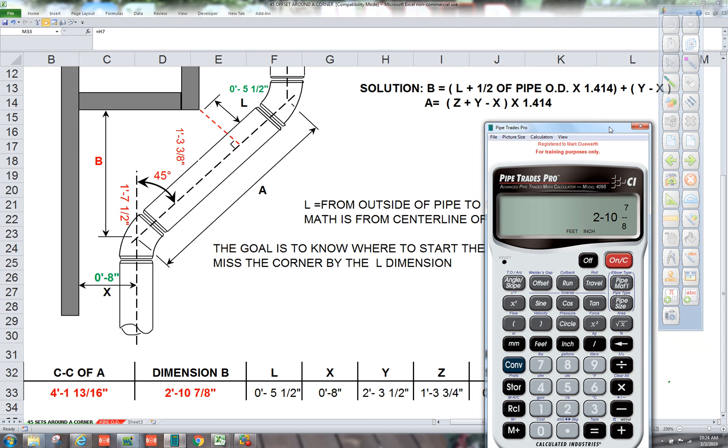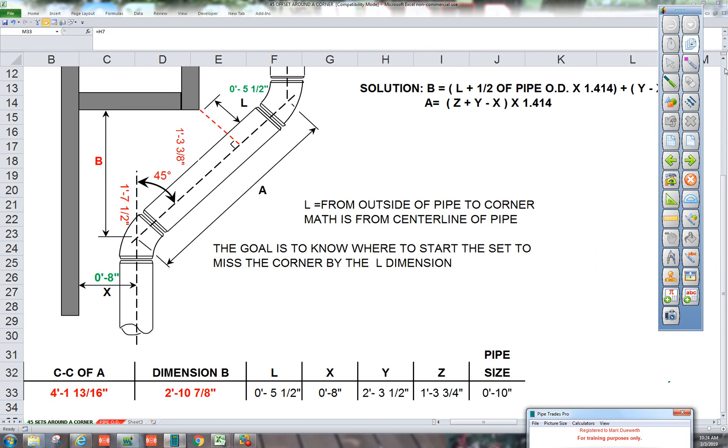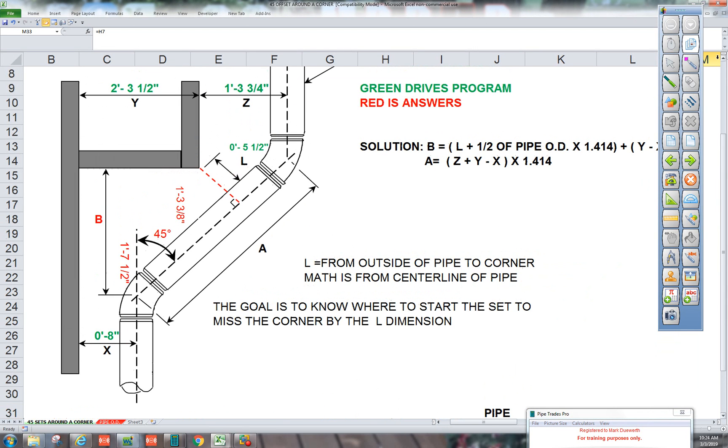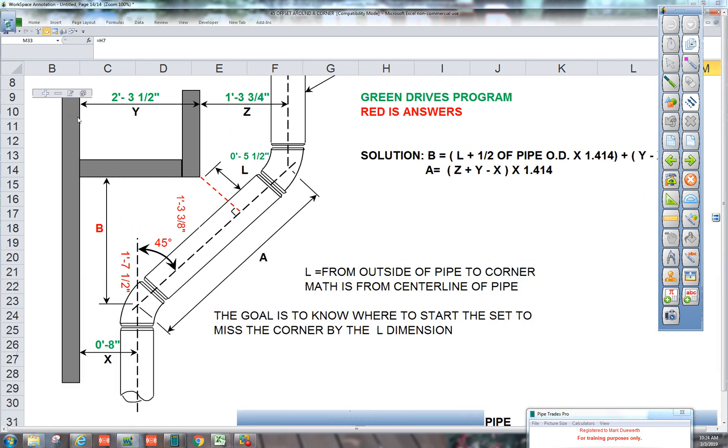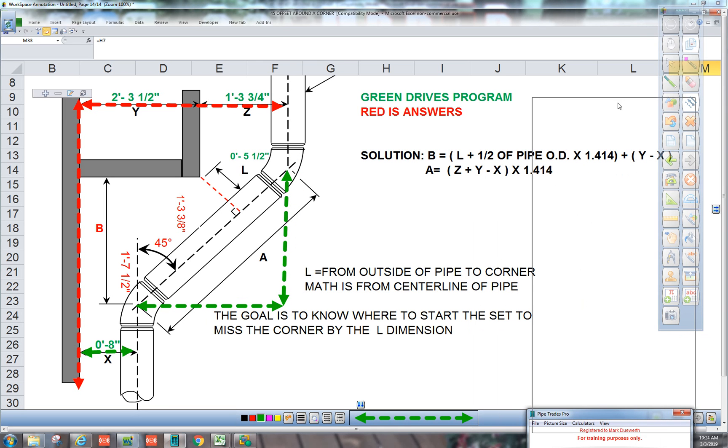Now we also have to find A. So A is going to be, A is going to be, this is pretty simple here. A is going to be Z plus Y. This is the wall we're measuring off of. Z plus Y minus X. And then you only have your 45 triangle. So let's do that. Z plus Y.